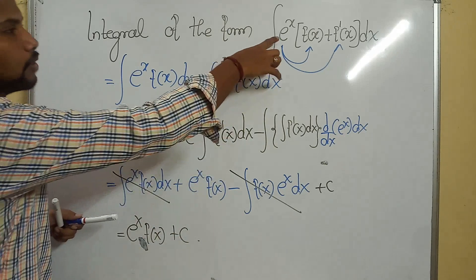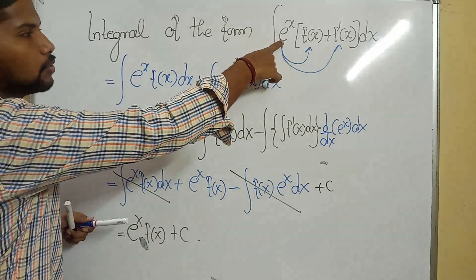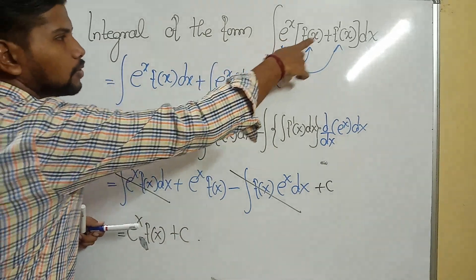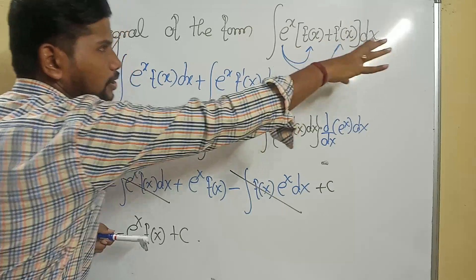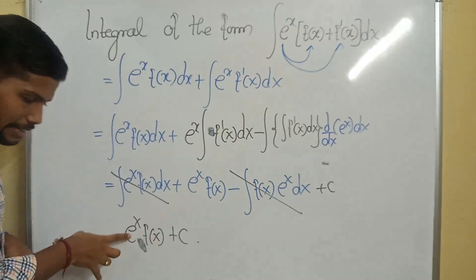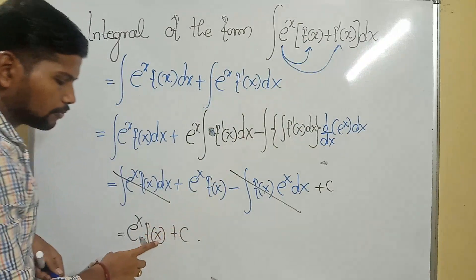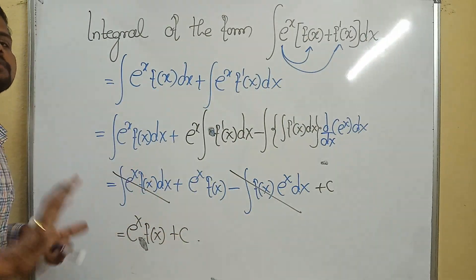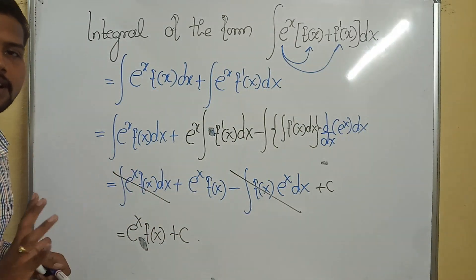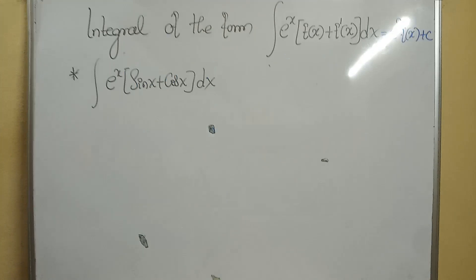The property is very simple: whenever integral of eˣ [f(x) + f'(x)] dx is given, you need to write the answer directly as eˣ·f(x) + c. That's it — you get the answer directly.